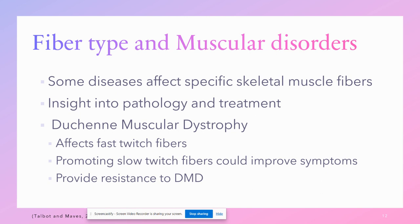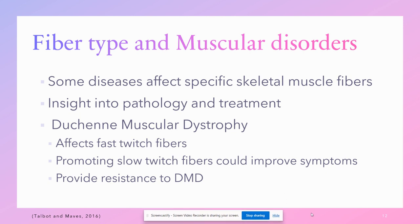While doing research for this project, I came across a paper by Talbot and Maves. It researched the idea of whether muscular disorders target a particular fiber type. The paper recognizes the differences between muscle fiber types and the impact these fibers can have on muscular diseases like dystrophies and sarcopenia. There are many diseases that affect a specific skeletal muscle fiber, and understanding these fiber-type-specific effects can provide insight into pathology and treatment for these disorders.